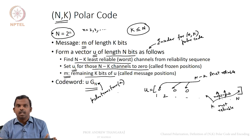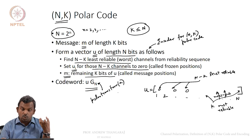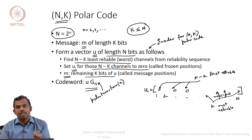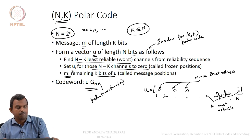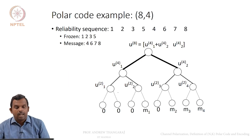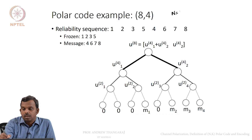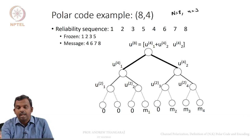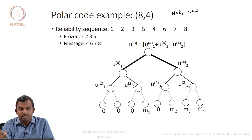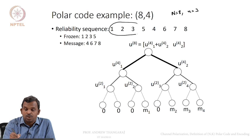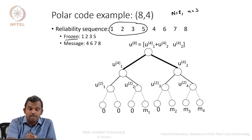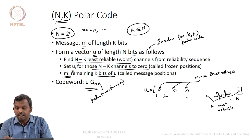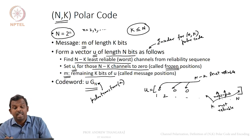It is as simple as that. We started with the 2×2 polar kernel, created the G_N polar kernel, looked at the polarization property, and defined the reliability sequence. Here are a few examples. For N equals 8 (n=3), defining the 8, 4 polar code: the reliability sequence is 1, 2, 3, 5, 4, 6, 7, 8. The frozen positions — the N minus K = 4 least reliable — are 1, 2, 3, 5. These are set to 0.